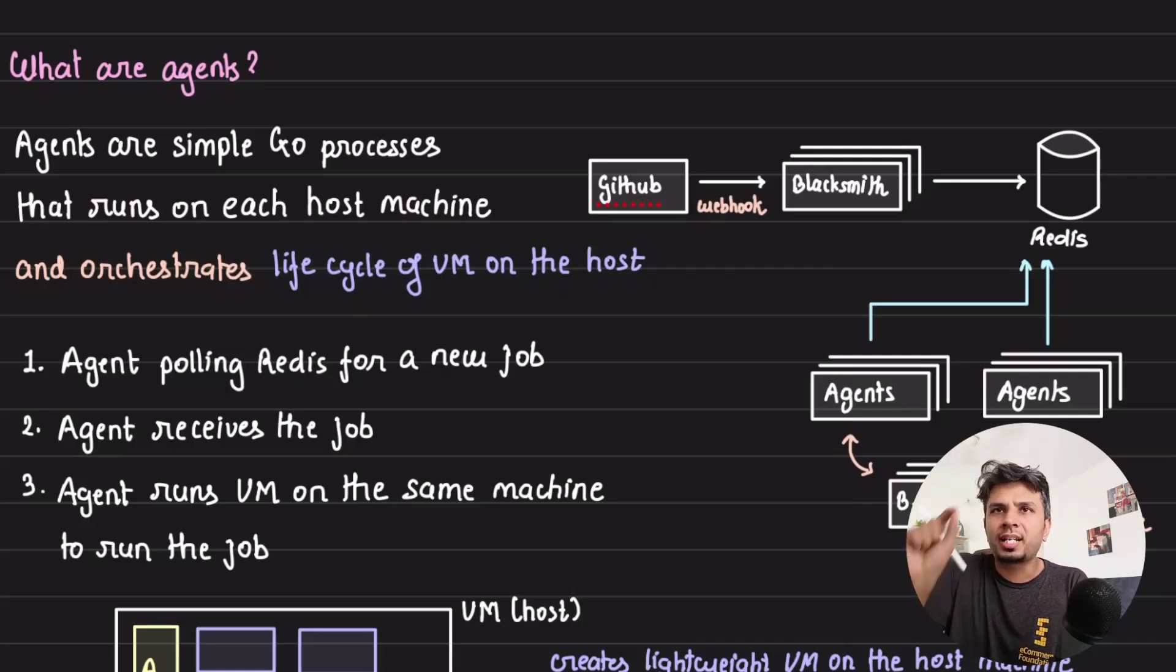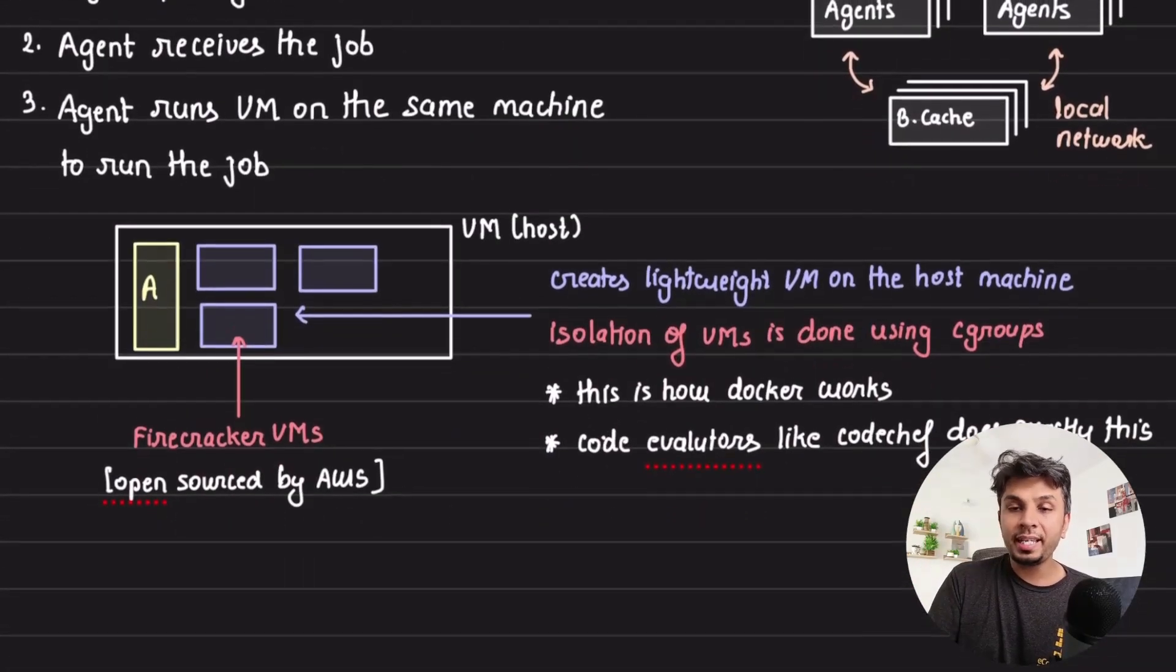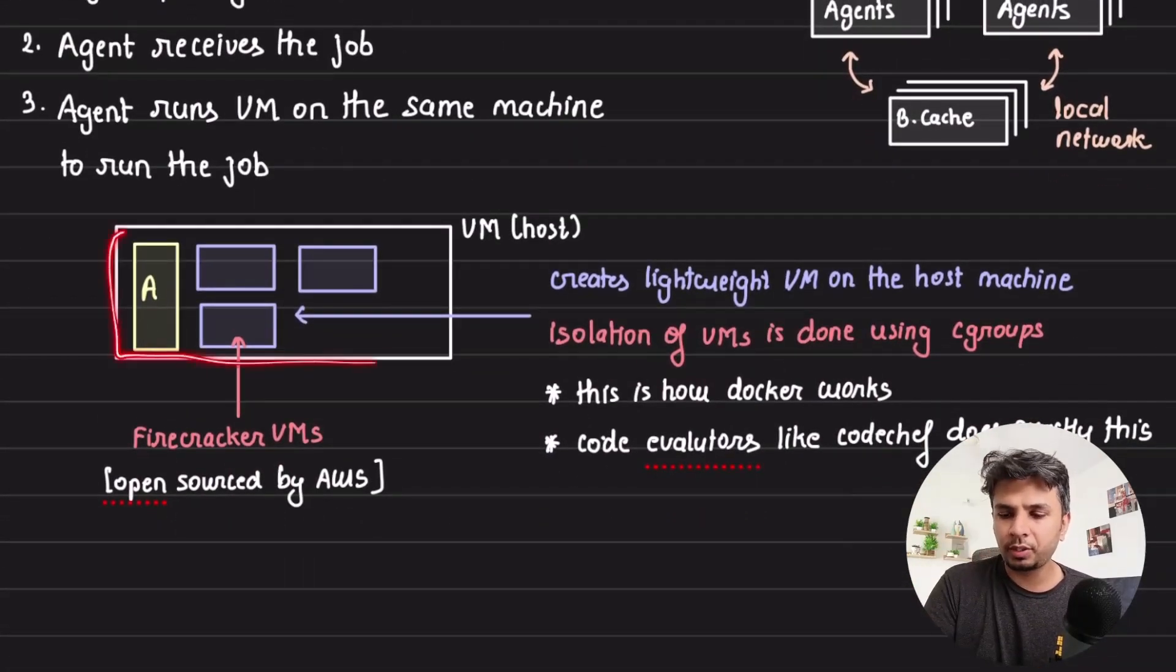So let's touch upon what are these agents, what these agents do. Now these agents, when they are polling, as we discussed, they are continuously polling Redis to pick up the job that needs to be executed. Now when they get a job to be executed, what they do is on each of the host, on each of the host, an agent process is running. This agent process is a very simple Go process.